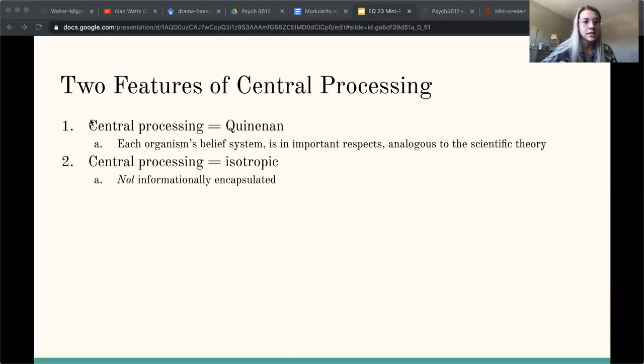So central processing is: one, Quinean, and two, isotropic. One, being Quinean, is that each organism's belief system is analogous to the scientific theory, so it is the organism's theory of the world that shares important properties with scientific theories. And two, it's isotropic, meaning that it's not informationally encapsulated. So any part of the belief system is relevant to confirming or disconfirming any other. We can't draw boundaries in the belief system and hope to contain the process of disconfirmation within the boundaries we've created.